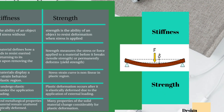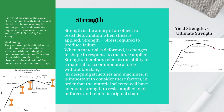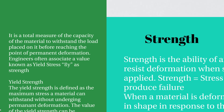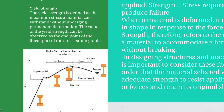Strength is the ability of an object to resist deformation when stress is applied. Strength equals the stress required to produce failure. When a material is deformed, it changes shape in response to the applied force. Strength therefore refers to the ability of a material to accommodate force without breaking. We must ensure the design has adequate strength to resist applied loads and retain its original shape. Strength is the total measure of a material's capacity to withstand load before reaching the point of permanent deformation.